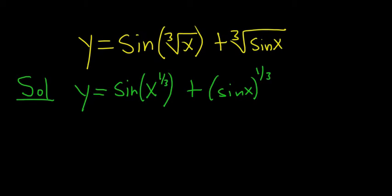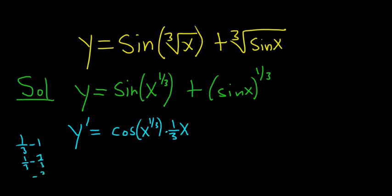So to take this derivative, we're going to use the chain rule. So y prime, we have sine of x to the 1 third. The derivative of sine is cosine. So this will be cosine of x to the 1 third times the derivative of the inside function. So the inside function is x to the 1 third. We're going to bring the 1 third down and put it in the front. Then we get x, and then 1 third minus 1. That's 1 third minus 3 thirds, minus 2 thirds.